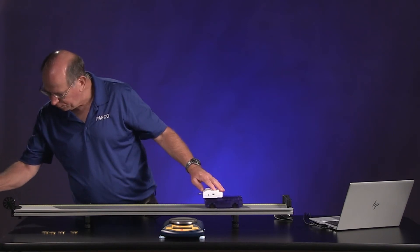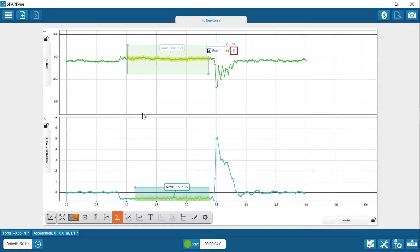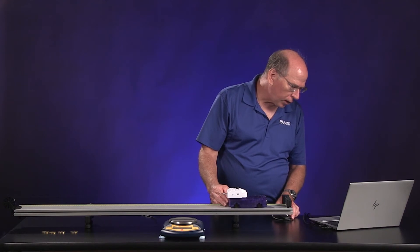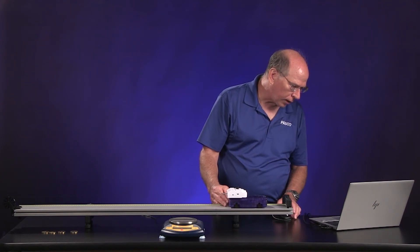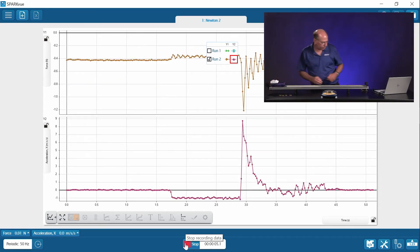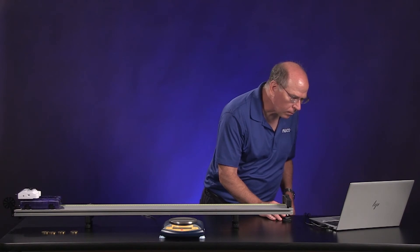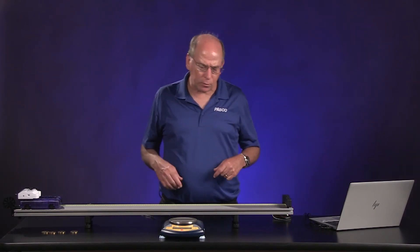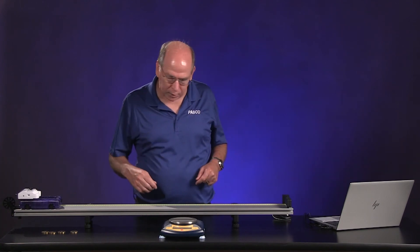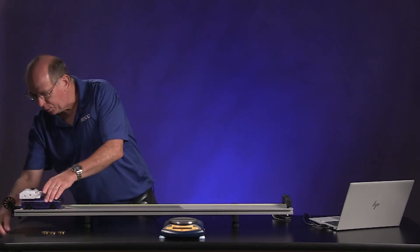One thing you might have noticed is the values are negative. The way we've attached the force acceleration sensor, the positive direction is opposite to the direction the cart is going. But that's not really a problem. You can just take the magnitude of the two values. You can make them both negative. They are both in the same direction. And so that's not really a problem.